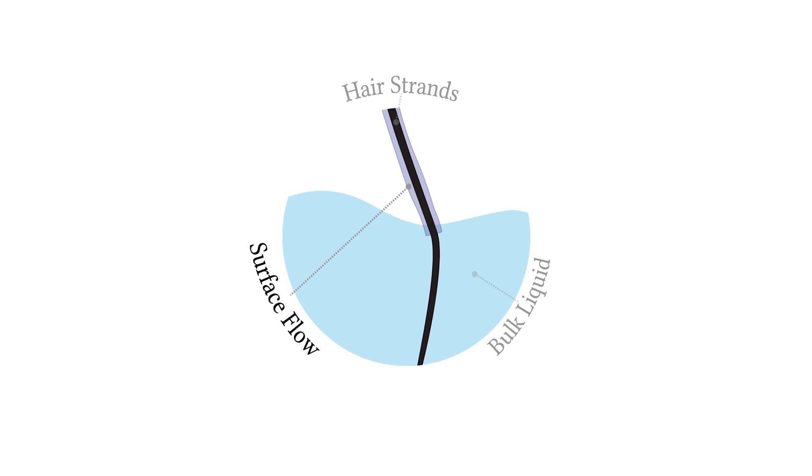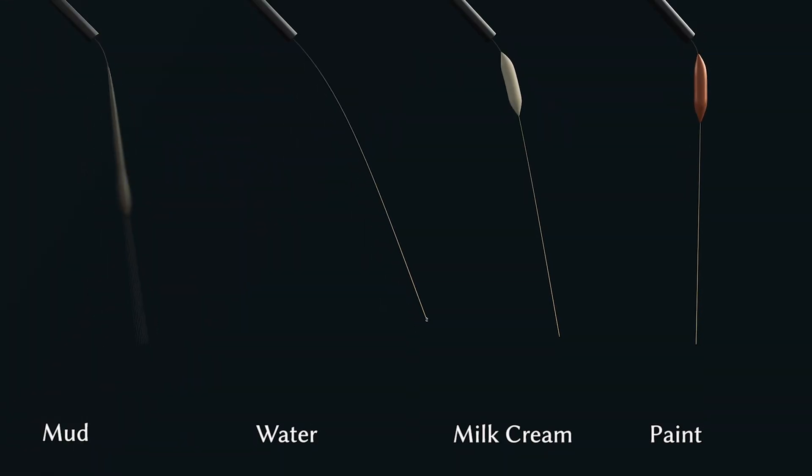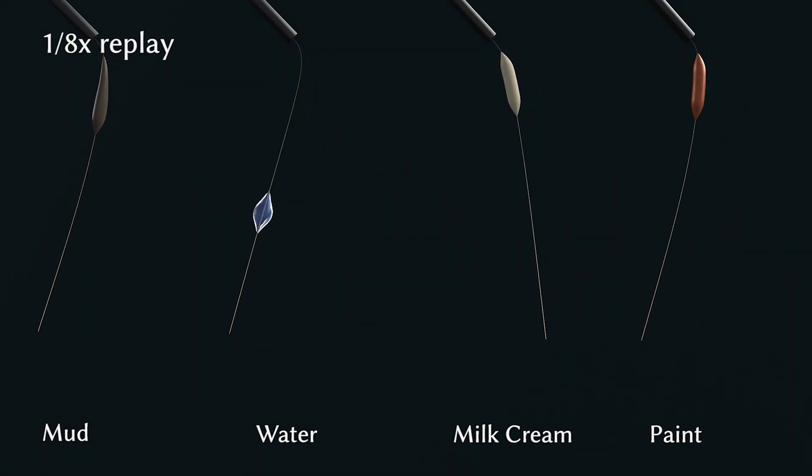Our first contribution is a surface flow model for elasto-visto-plastic fluid on strands. Here, we test our model with large droplets of four different kinds of materials flowing on a thin strand. The water immediately flows off and the mud slowly expands, while the paint and cream flow very little in this scenario.